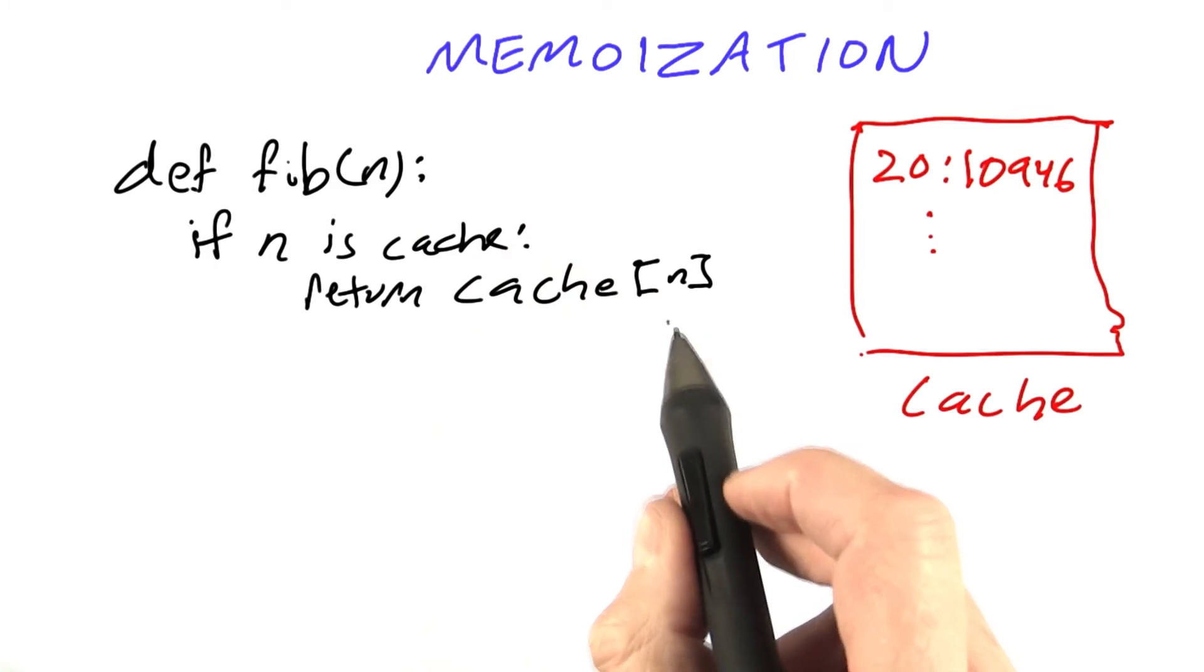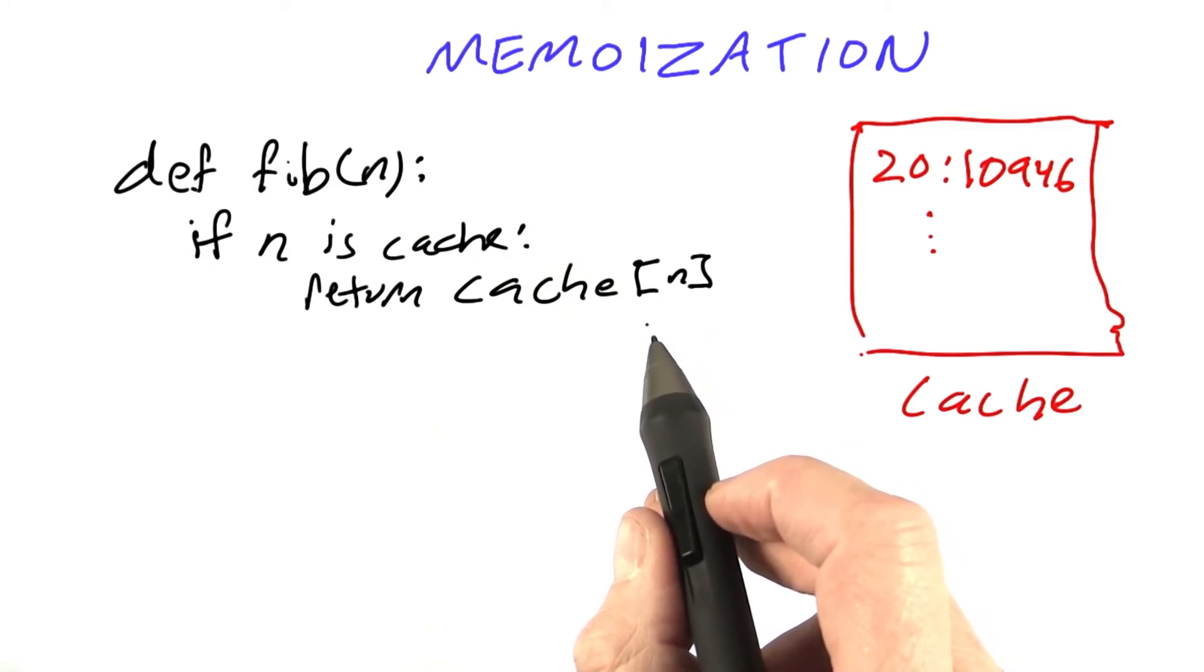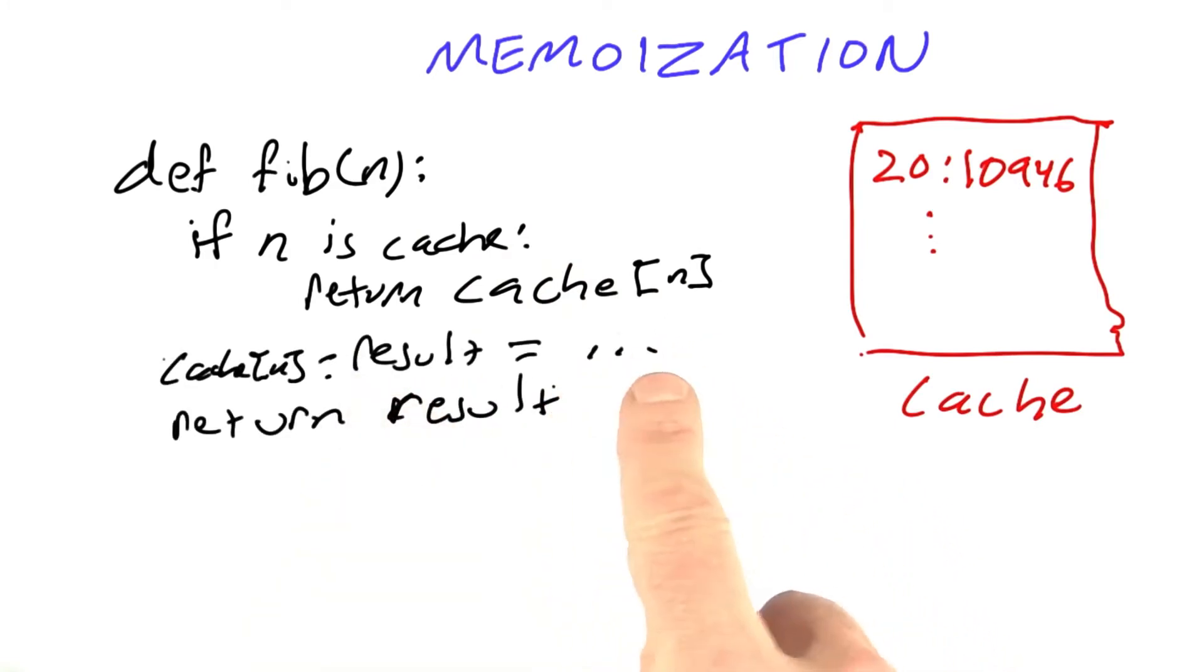then we just go ahead and return it. Otherwise, we compute it, store it, and then return it. This part with the dot, dot, dot is the body of the function. All the rest is just the kind of boilerplate that you have to do to implement this idea of a cache.